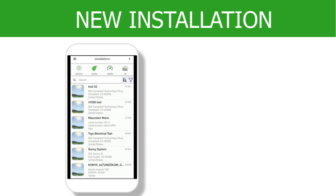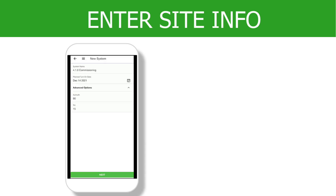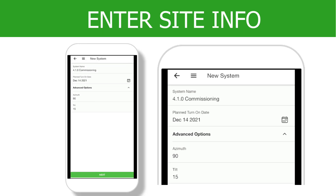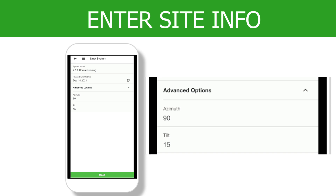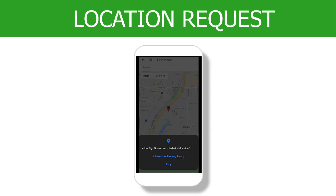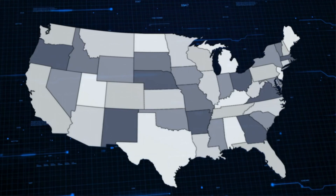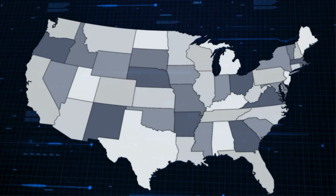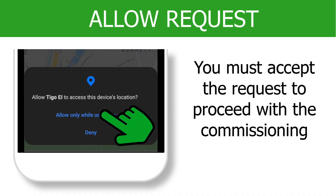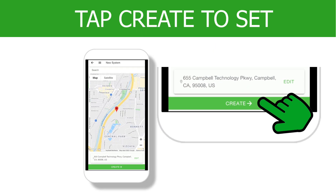To begin a new installation, tap the plus icon on the upper right of the screen. Fill in the site name and expected turn on date. Under Advanced Options, you can set the tilt and azimuth of the array. Click Next to advance to the next step. A location request will pop up on the screen — the app will use location services to identify the installation. Press Create to complete this part of commissioning.